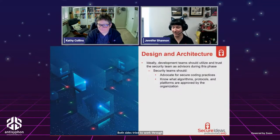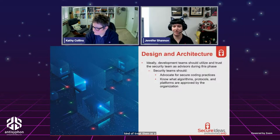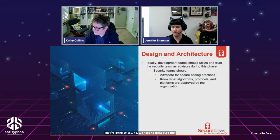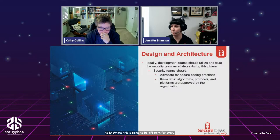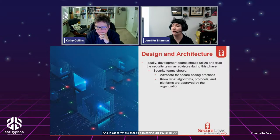Moving to the Design and Architecture phase: ideally the development team will use the security team as advisors. The security team should be advocating for secure coding practices — making sure dependencies aren't vulnerable, libraries are up to date. They also need to understand which algorithms, protocols, and platforms are approved by the organization and which will be compliant, including considerations for PCI, HIPAA, or other regulatory bodies.